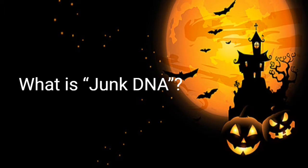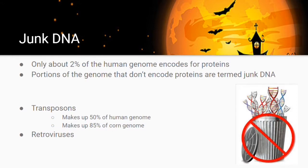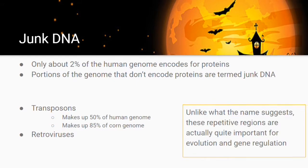Now let's talk about non-coding regions, sometimes termed junk DNA. Only 2% of your entire genome encodes proteins; the rest is non-coding regions. This junk DNA can arise through two methods: transposons, which make up about 50% of the human genome and 85% of the corn genome, and retroviruses, which are a type of virus with RNA genetic information. Unlike what the name suggests, this junk DNA can actually be very important for the evolution of organisms and for gene regulation.